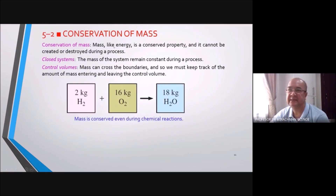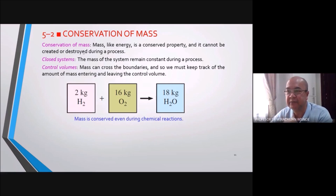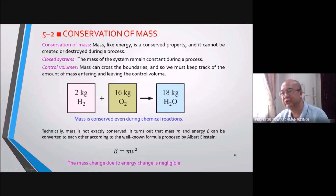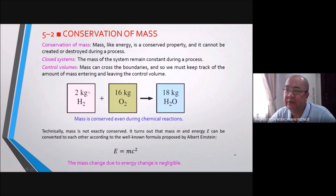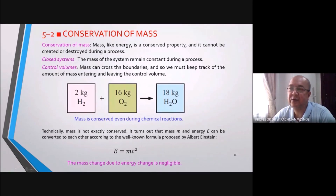Conservation of mass: mass, like energy, is a conserved property — it cannot be created or destroyed during a process. It can change shape, but the mass is still there. For example, if you eat one kilogram of food, your weight increases by one kilogram in our assumption (ignoring conversion to energy). So if you mix 2 kg of hydrogen with 16 kg of oxygen, you get 18 kg of water. A closed system means the mass remains constant; in a control volume, mass can cross the boundaries.